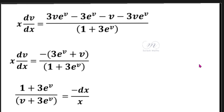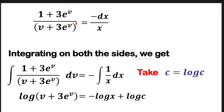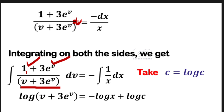Now we integrate both sides. Looking at the denominator function: the derivative of v is 1, which is present in the numerator. Similarly, the derivative of 3e^v is 3e^v, which is also present. So the integral of the left side gives log of the denominator, that is log(v plus 3e^v).